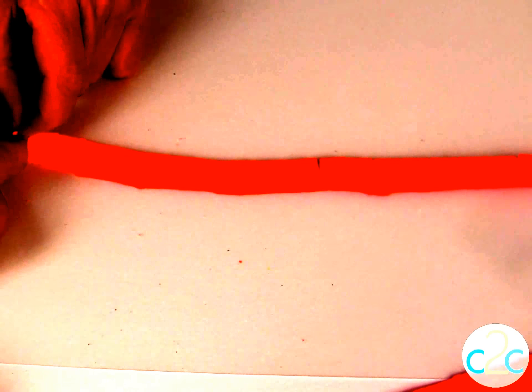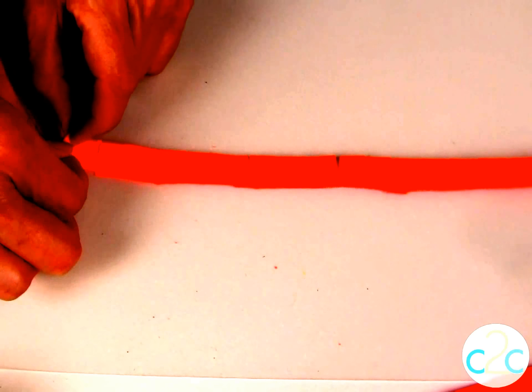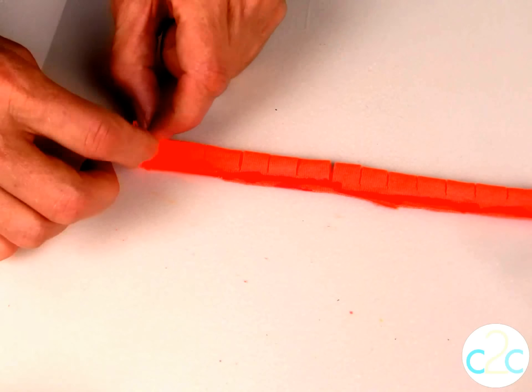So you just start at one end and keep the fabric on the table because that's going to help you to keep this roll very tight, and roll all the way to the end.